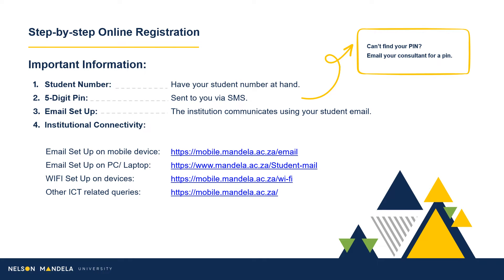In successfully registering, please note the following. Ensure you have your student number and five-digit PIN at hand. The five-digit PIN should have been received by the qualifying student via SMS. The institution's primary medium of communication is email. To ensure your digital connectivity is set up, please make use of the provided links to set up your institutional email on your devices.